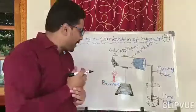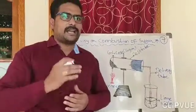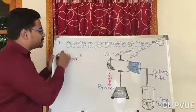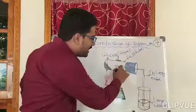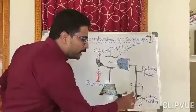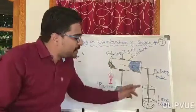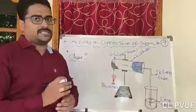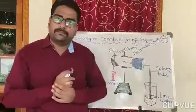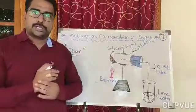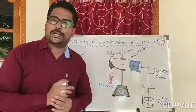We heat the glucose or sugar solution and observe what changes happen. When we burn glucose or sugar, it starts to char — it becomes blackened. Then it starts to give flames. After some time, a gas is released from the test tube, which enters into the lime water, and the lime water turns milky white. In the process of combustion, carbon dioxide gas is released, which turns the lime water milky white. Heat energy is also released, and water is also produced.